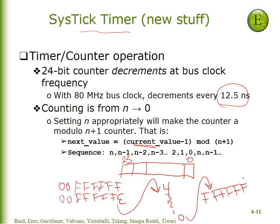You don't have to run your software — this will happen automatically in hardware. SysTick is a counter that automatically decrements every 12.5 nanoseconds, and when it gets to 0 it will reload back up to what we call the reload value. In our case that reload value is going to be six F's.